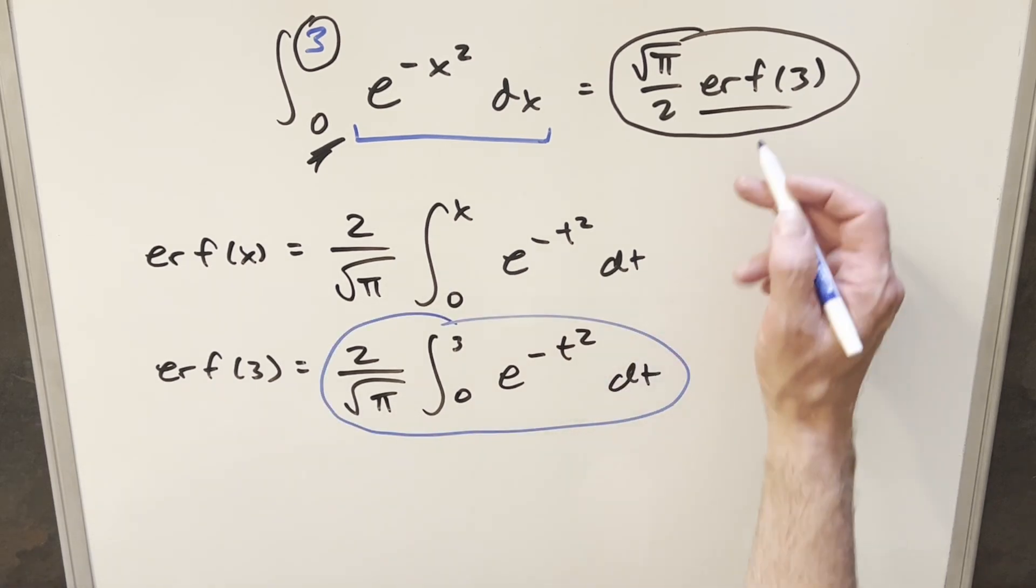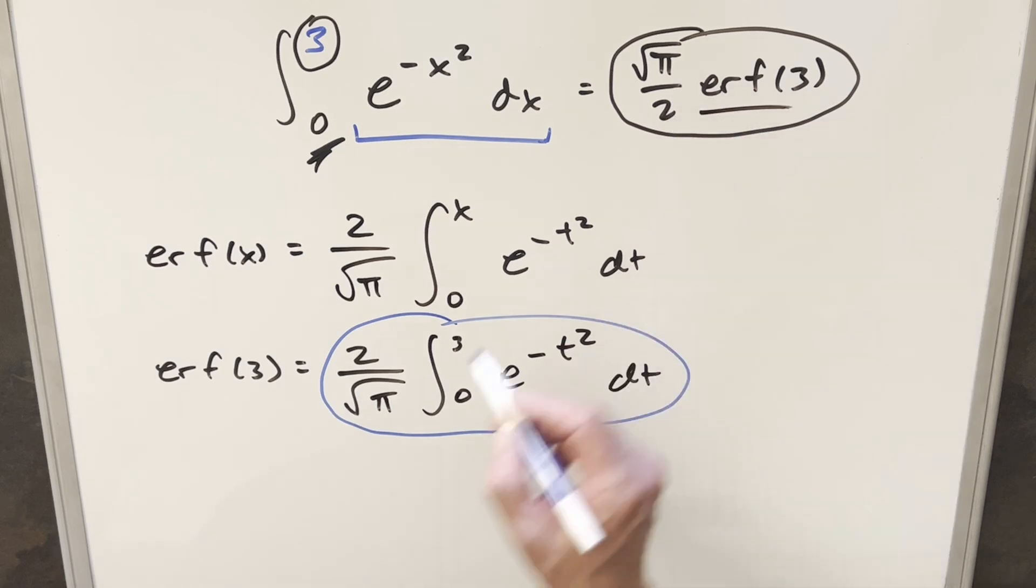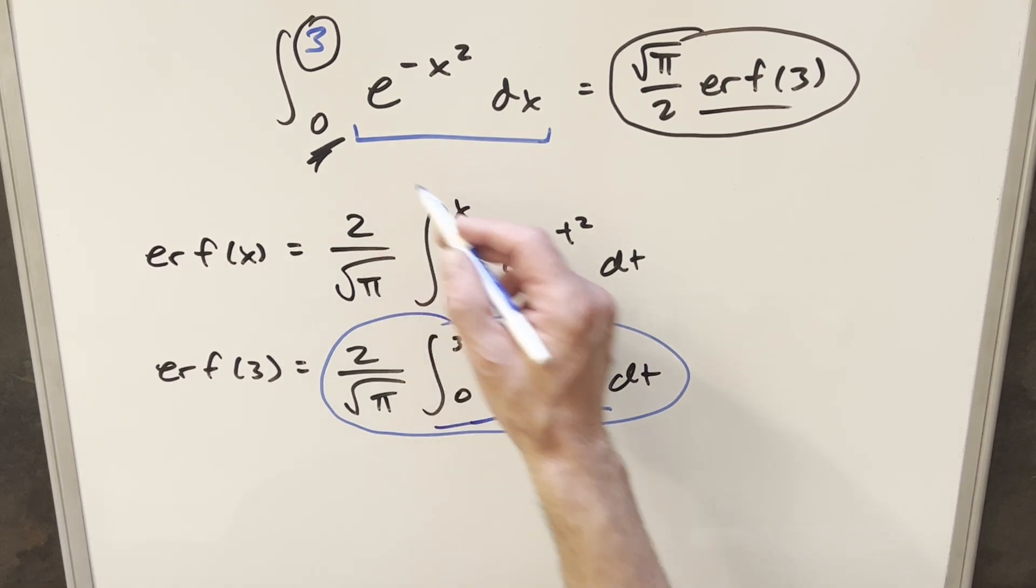So if you just take this and plug it back in for the error function at 3, what's going to happen is square root of pi over 2 times 2 over square root of pi, that's just 1. And so we get back this, but this thing right here, this is the same thing as our original problem.